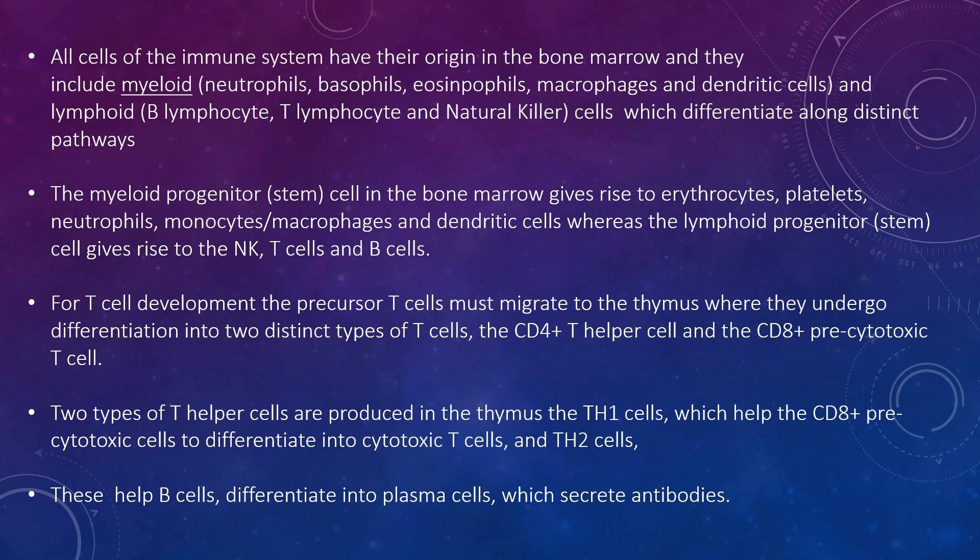All cells in the immune system have their origin in the bone marrow, and they include myeloid cells — which are neutrophils, basophils, eosinophils, macrophages, and dendritic cells — and lymphoid cells — which are B lymphocytes, T lymphocytes, and natural killer cells — which differentiate along distinct stem pathways.